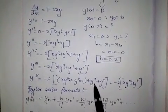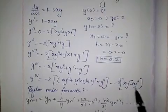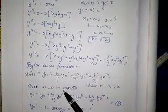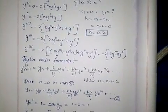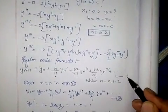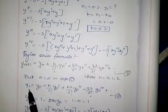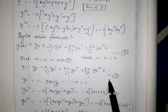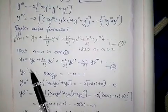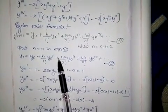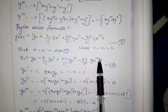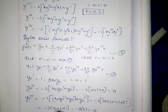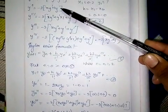Then we put n equals 0 in Taylor series formula, which we consider as the first equation. By putting 0 we get the second equation. We have to find y'0, y''0, y'''0, so we put x0 and y0 in these equations.